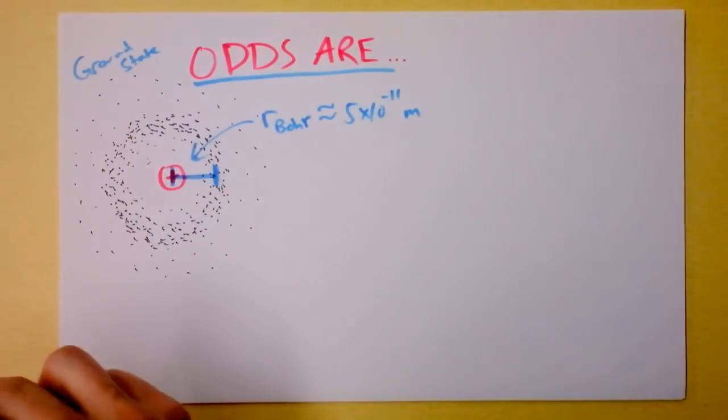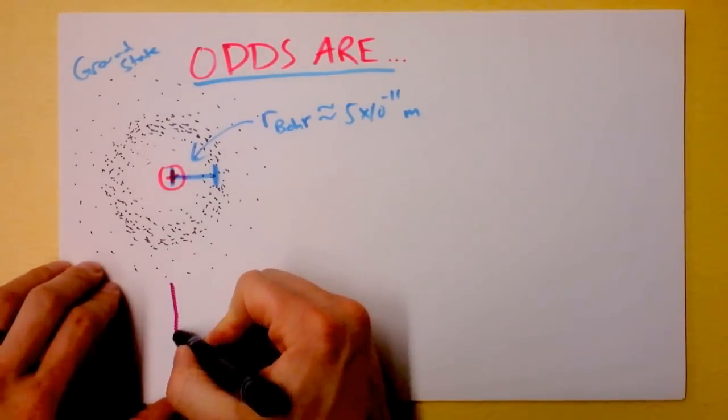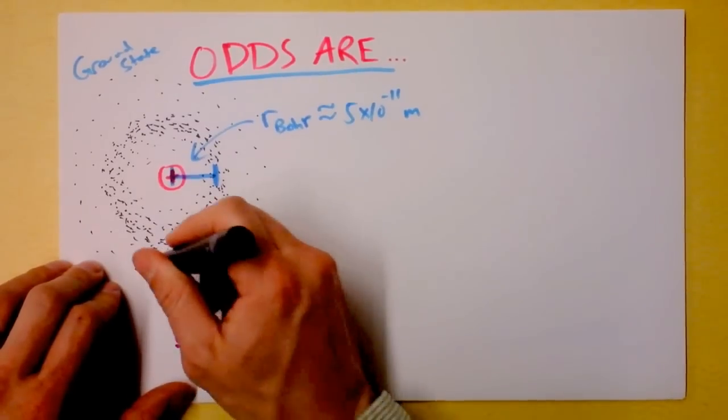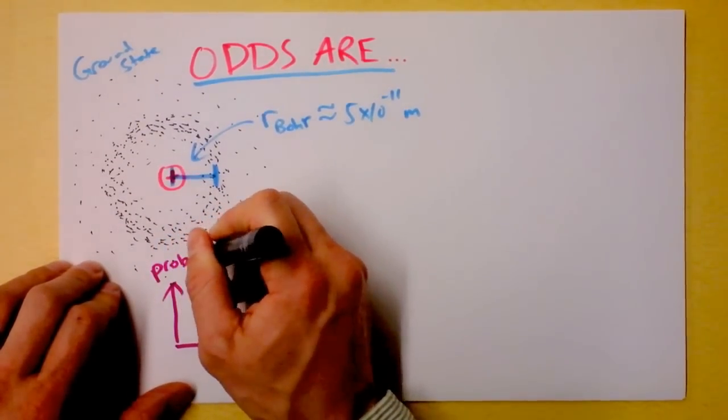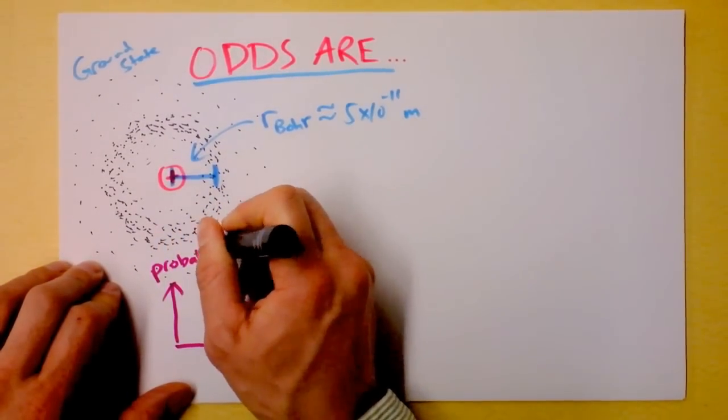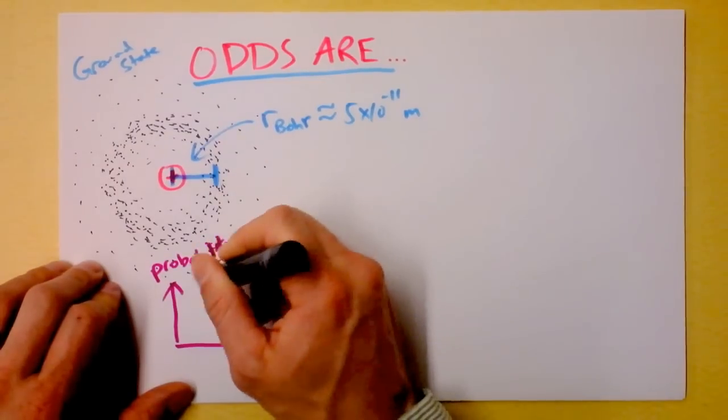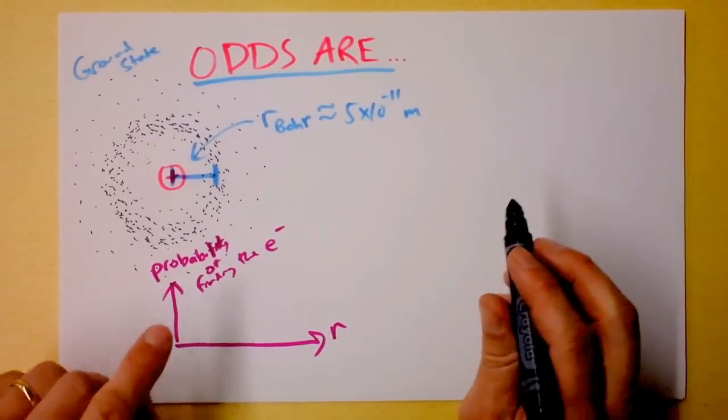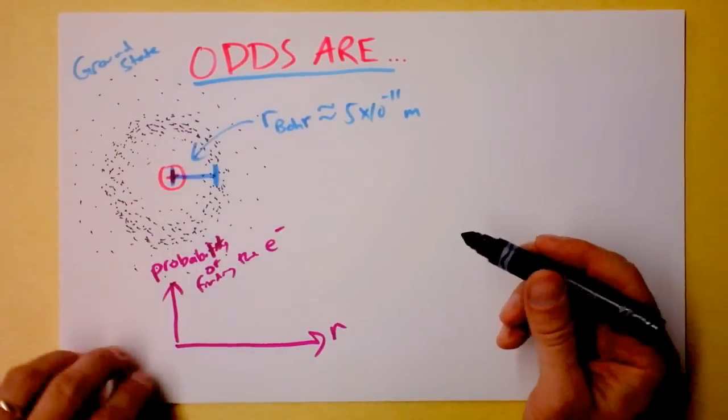But there's some probability. Really we have to do statistical mathematics at this time. So I'm going to make a graph here of probability as a function of radius. This will be probability of finding the electron at a certain distance. And you see that the probability peaks right here.